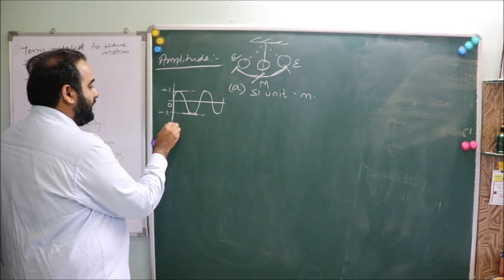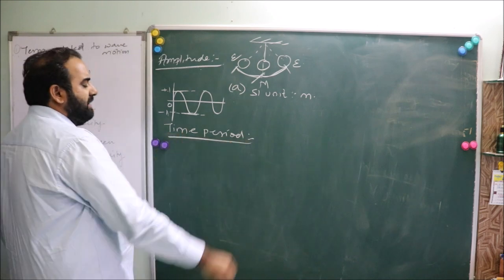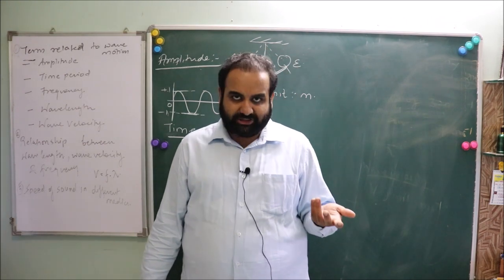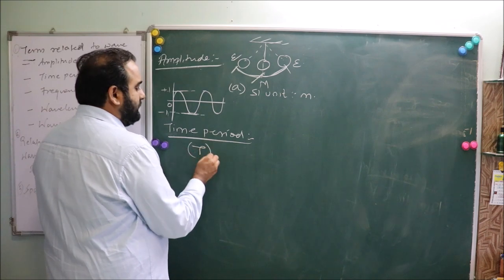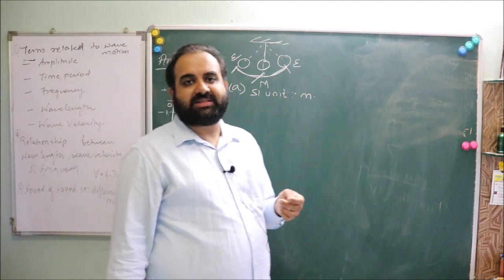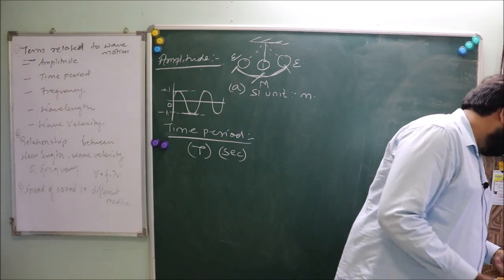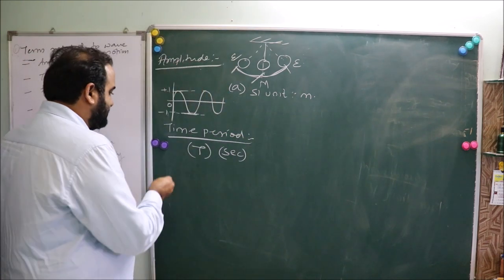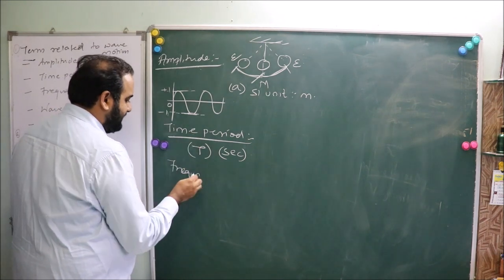The next parameter is time period. As the name suggests, time period is the time required by the wave to complete one vibration. It is denoted by the symbol T, and since it is a measure of time, it is measured in seconds.